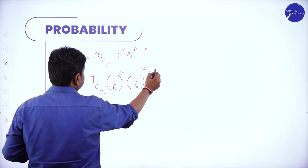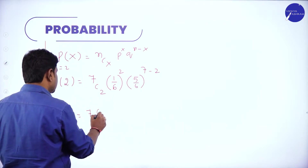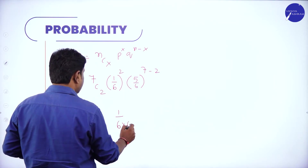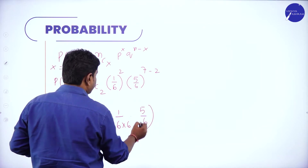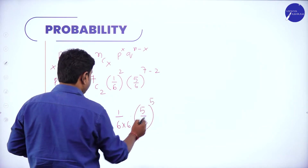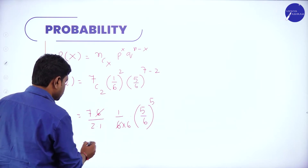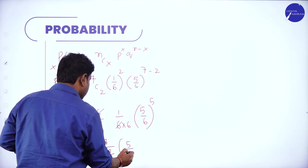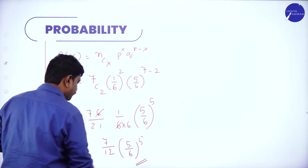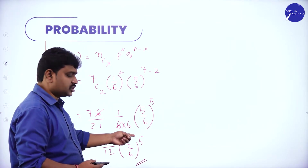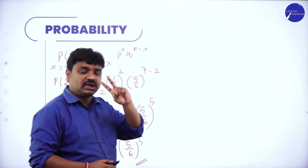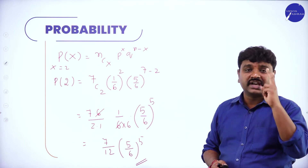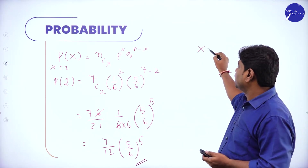Simplify: 7C2 = (7×6)/(2×1) = 21. (1/6)^2 = 1/36. (5/6)^5 remains. Canceling a 6 from 21 and 36 gives 7/12. So the answer is (7/12) × (5/6)^5. This is the probability of getting 5 exactly twice.